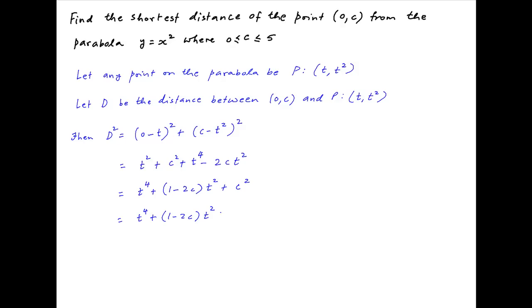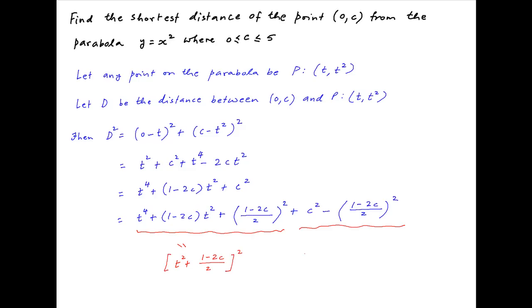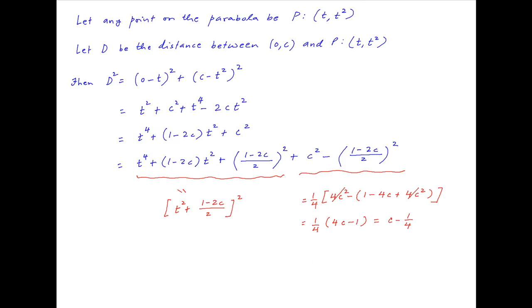Now we add and subtract ((1 − 2c)/2)² to the expression on the right-hand side. The first three terms form a perfect square equal to (t² + (1 − 2c)/2)², and the last two terms add up to (1/4)(4c² − (1 − 2c)²), which equals (1 − 4c + 4c²). This simplifies to (1/4)(4c − 1), which is equal to c − 1/4.